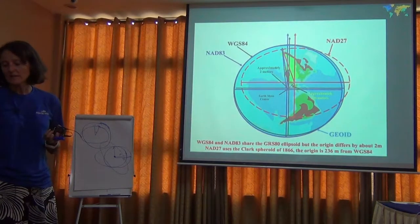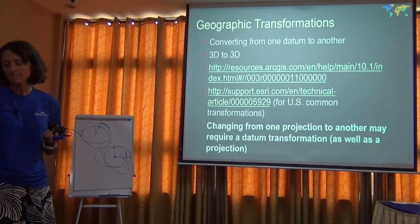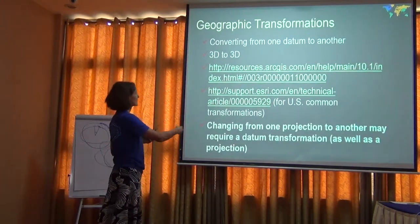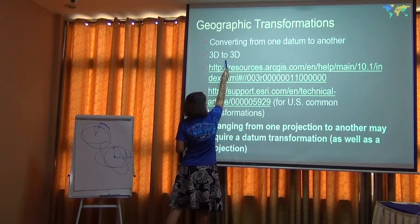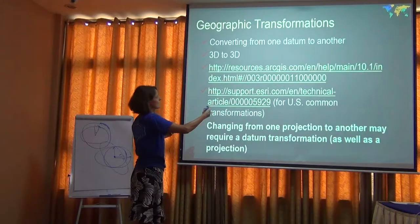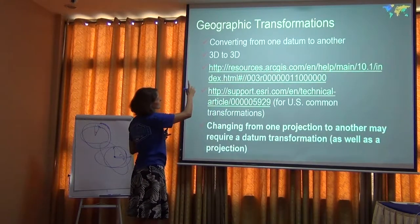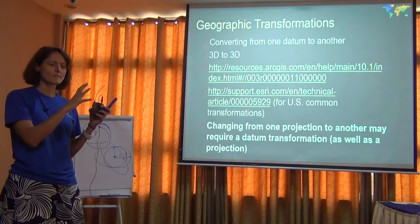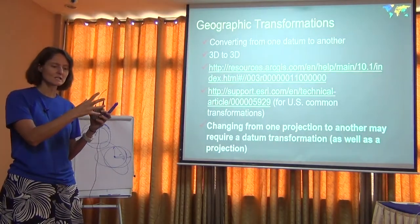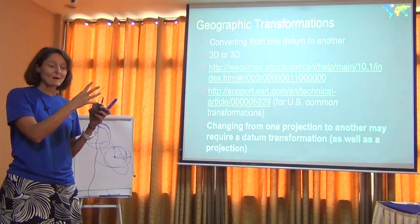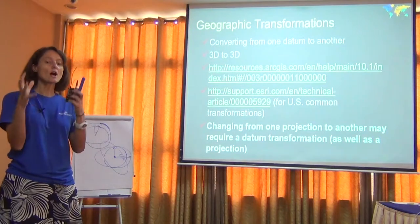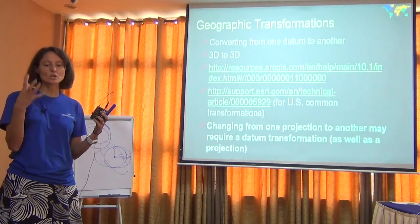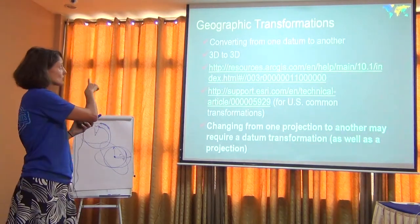Sometimes you have a file that needs to change from one datum to another. That would be a 3D transformation to another 3D representation of Earth — that's called a geographic transformation. You're saying this model of the Earth as a 3D object is not what I need as my base to do all the projection calculations. I need another 3D model of the Earth. Changing from one datum to another datum is a geographic transformation.